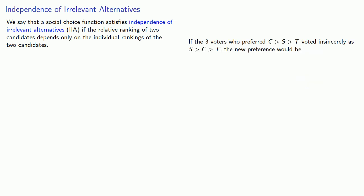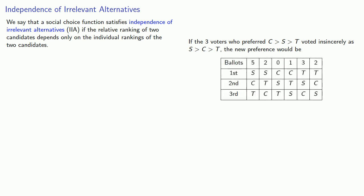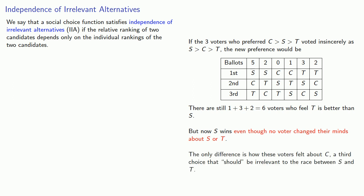Now, if the three voters who preferred C over S over T voted insincerely as S over C over T, the new preference would be... And the thing to realize is there are still 1 plus 3 plus 2, 6 voters who feel T is better than S. But now S wins, even though no voter changed their minds about S or T. The only difference is how these voters felt about C, a third choice that should be irrelevant to the race between S and T. And this says that plurality fails this independence of irrelevant alternatives.